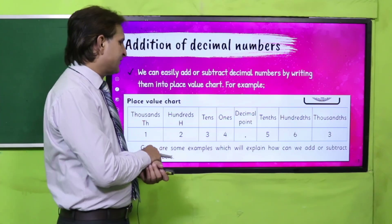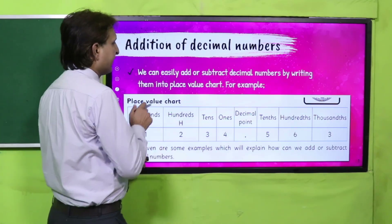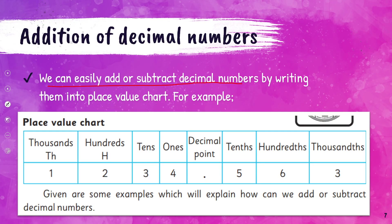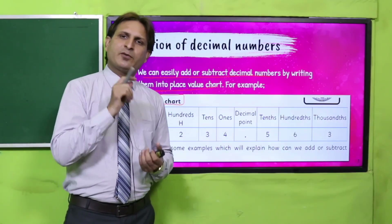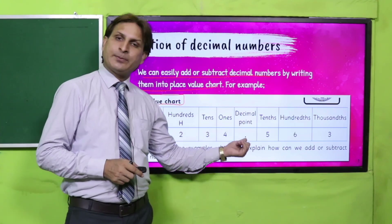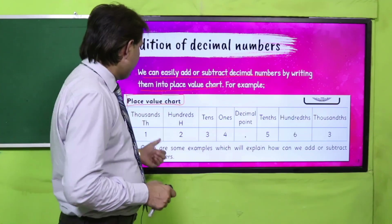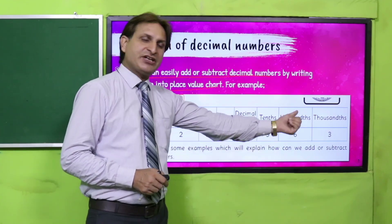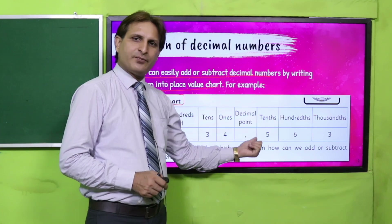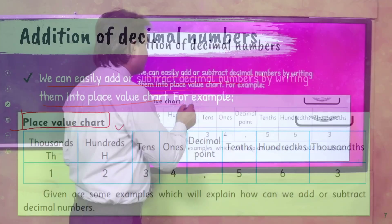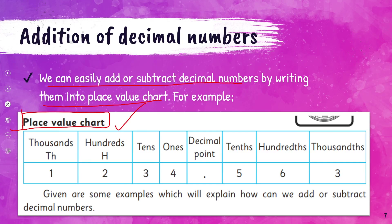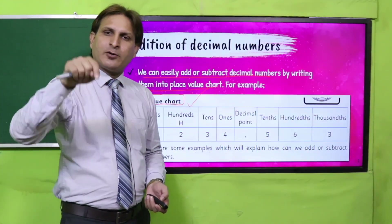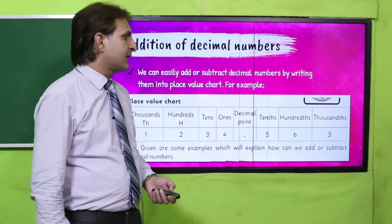Ab aate hain ek example ki taraf. We can easily add or subtract decimal numbers by writing them into a place value chart. Place value chart mein numbers ko kaise write karna hai — yeh maine aapko pehle bhi bata diya hua hai. For example, 0.563 — isi tarah apne numbers ko place value chart mein write kar dena hai, aur phir same column wale digits ko add karna hai.